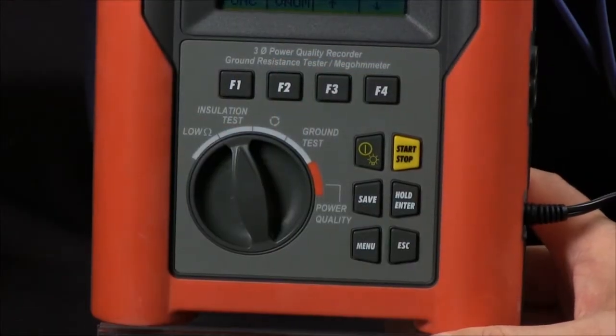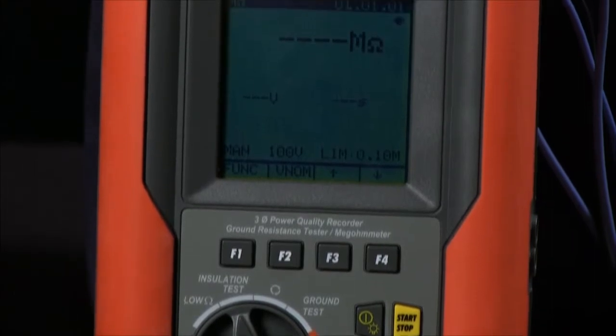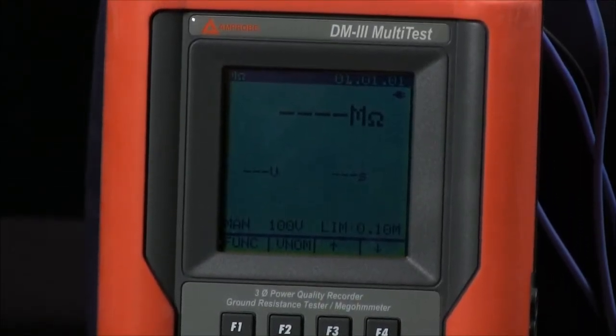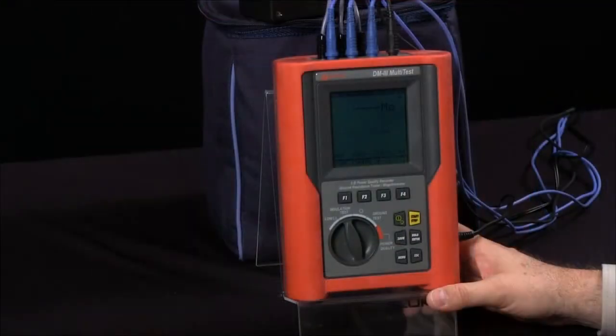I can also shift over to my insulation test, and I can range from 50 volts up to 1,000 volts of test voltage in specific increments, thereby also checking my insulation as well as my motor windings.